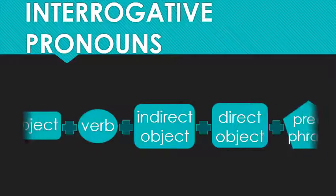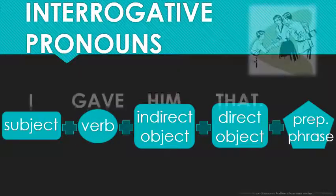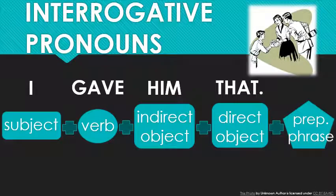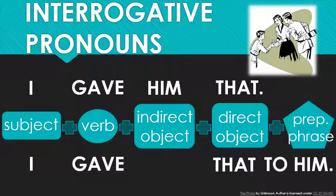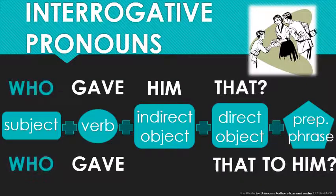Now let's see how these interrogative pronouns are used to create questions. Here's a basic statement: 'I gave him that' or 'I gave that to him.' If you want to turn a statement into a question using an interrogative pronoun and the pronoun is your subject, you don't have to do anything — your question word is already the first word in the sentence, so no inversion needed. 'I gave him that' becomes 'Who gave him that?' or 'Who gave that to him?' Easy.